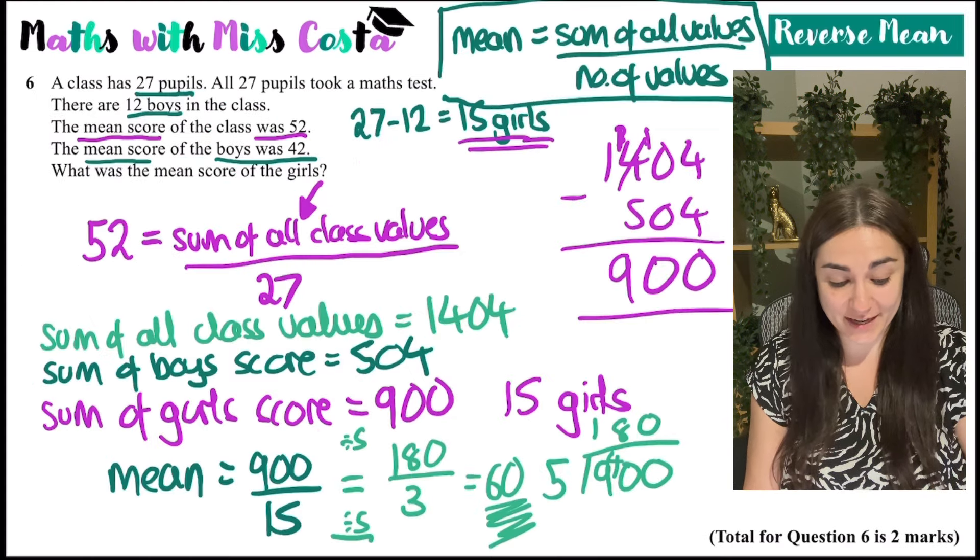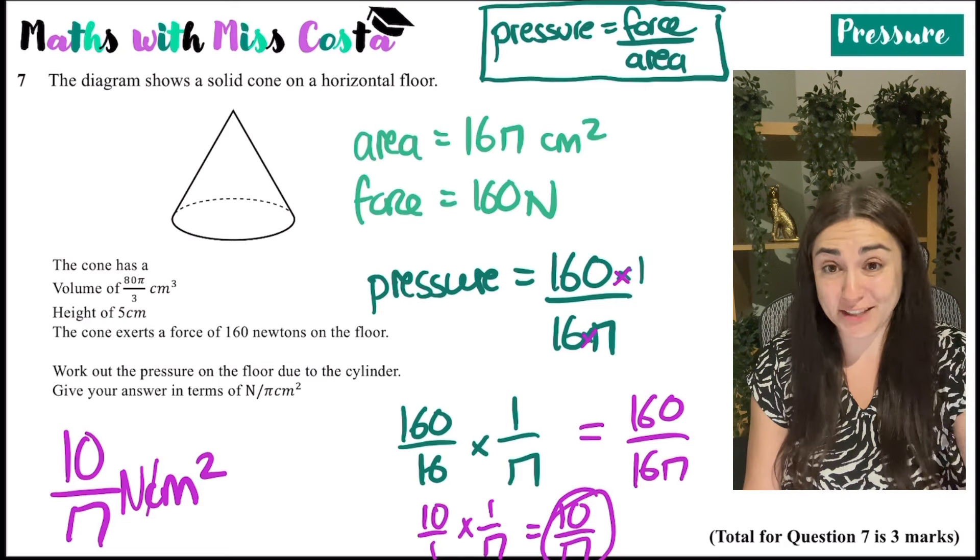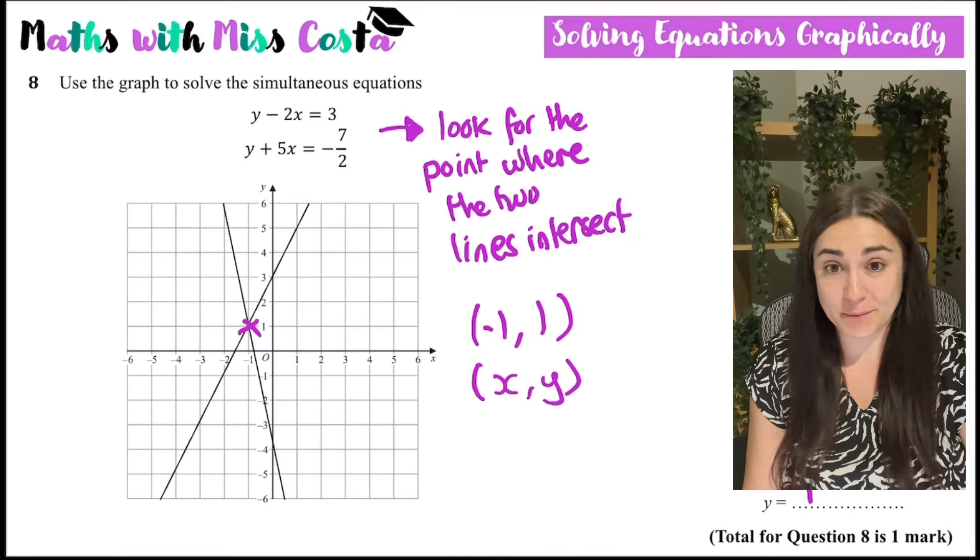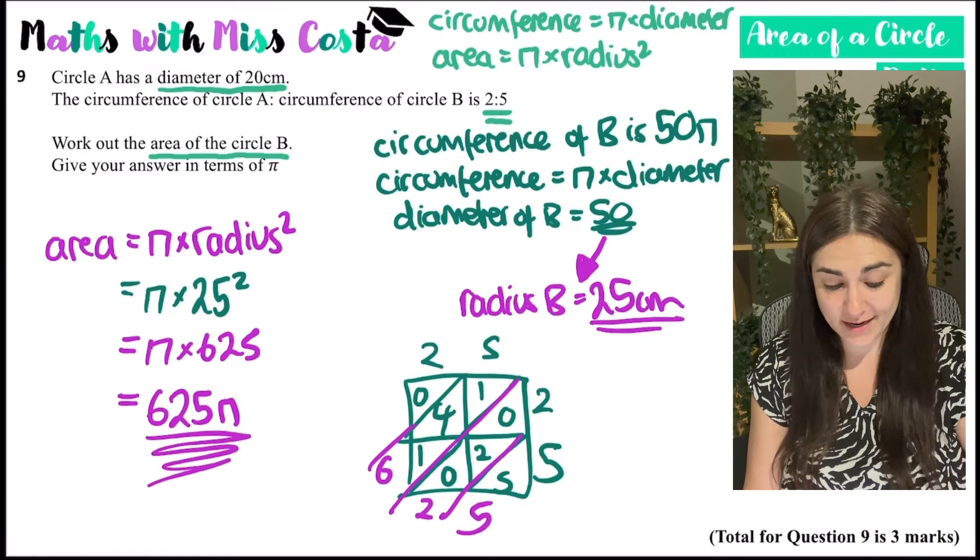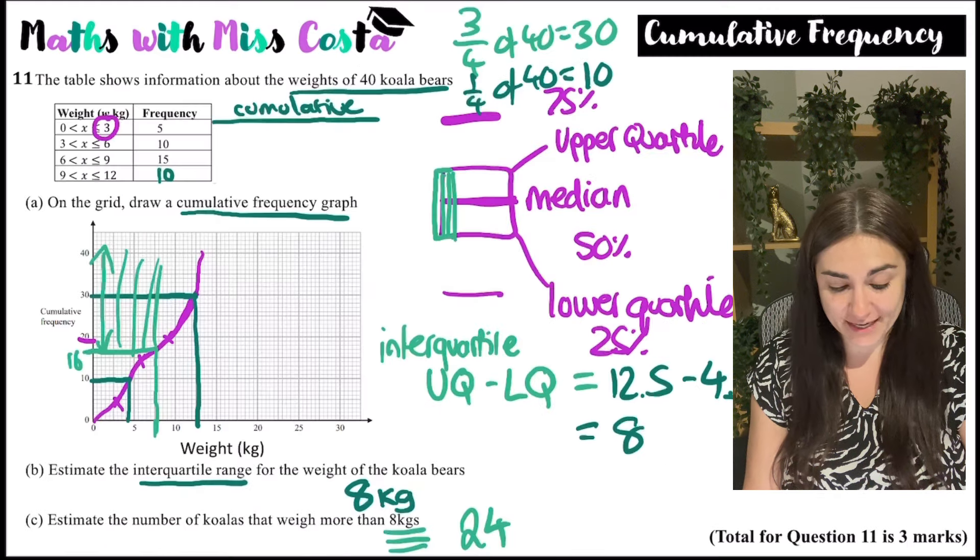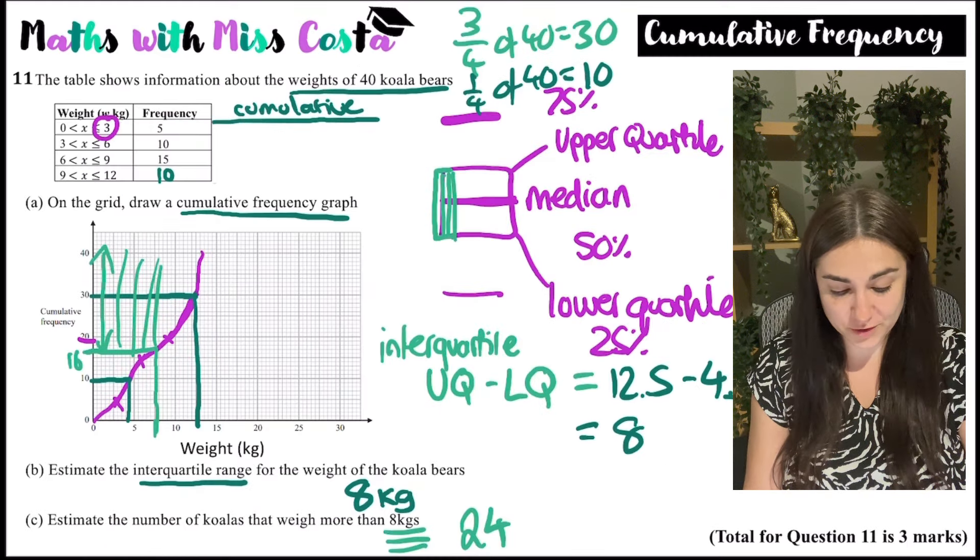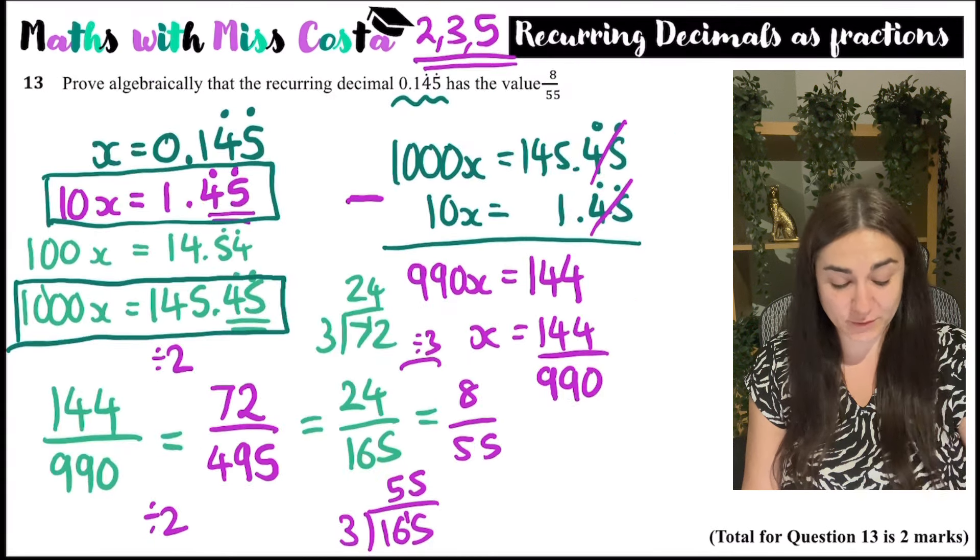Question six is the reverse mean. Question seven is cone and pressure. Question eight is simultaneous equations. Question nine is the area of a circle kind of problem solving. Question ten is sector of a circle problem solving. Eleven is a cumulative frequency graph. Twelve is trigonometry.